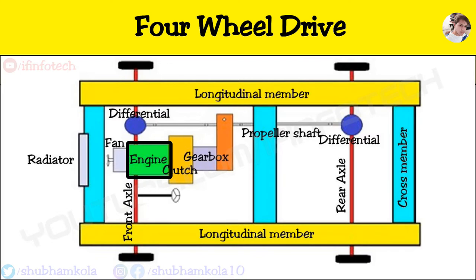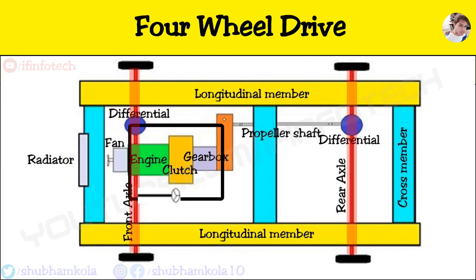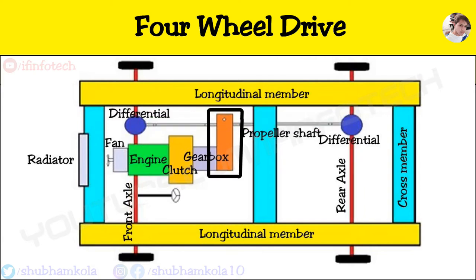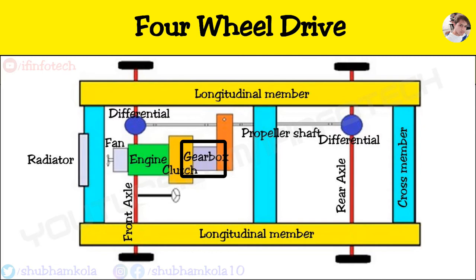Here in this layout, the engine-clutch-gearbox unit drives the beam-type axles through the propeller shaft, with 4 universal joints and a transfer case. Motive power is developed in the engine, and this power is transmitted to the gearbox input shaft through the clutch. The function of the gearbox is to obtain various fixed torque ratios according to speed requirements, and the function of the clutch is to connect or disconnect engine power transmitted to the gearbox input shaft.